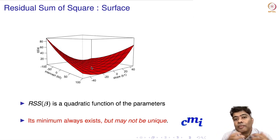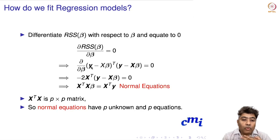It turns out the minimum always exists—it may not be unique, but the minimum always exists. How can we get this minimum? The easiest thing is to differentiate this residual sum of squares with respect to beta and set it equal to zero.